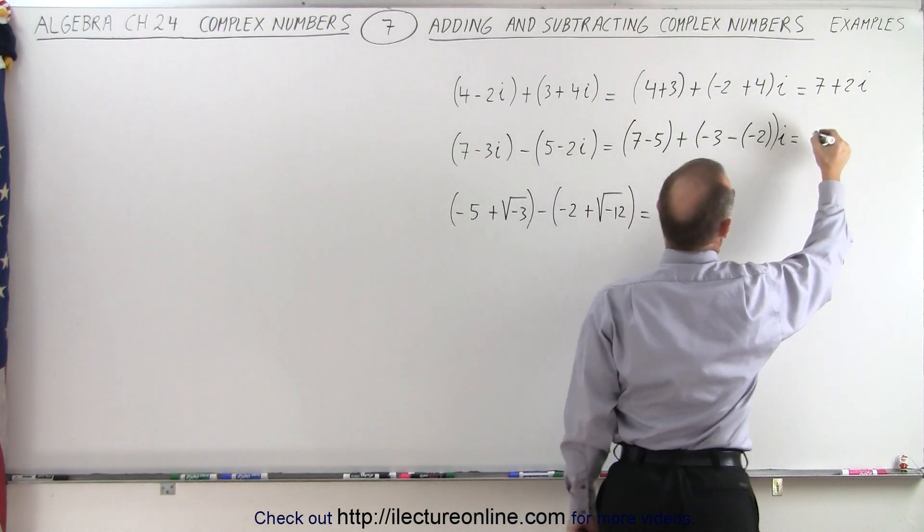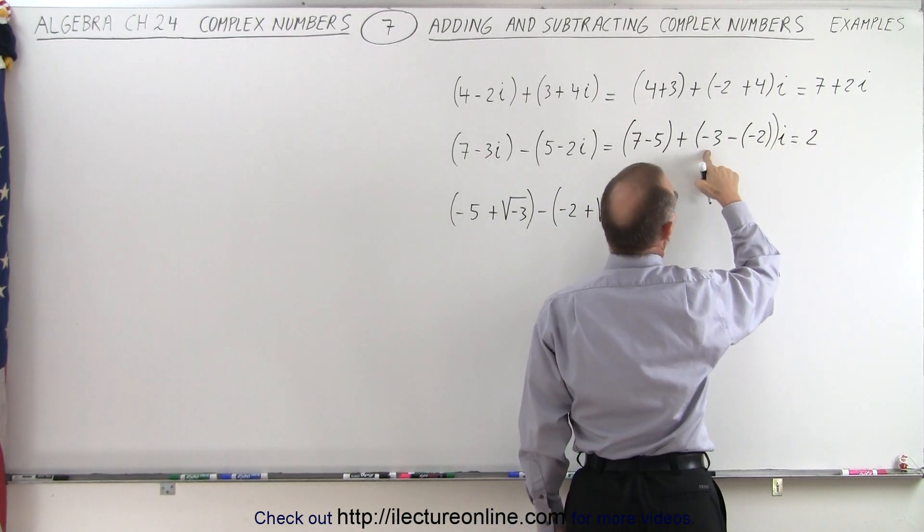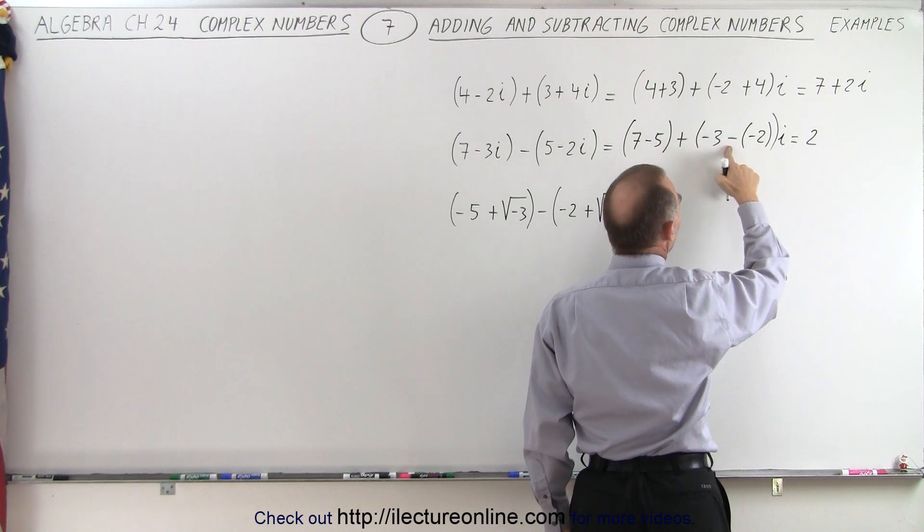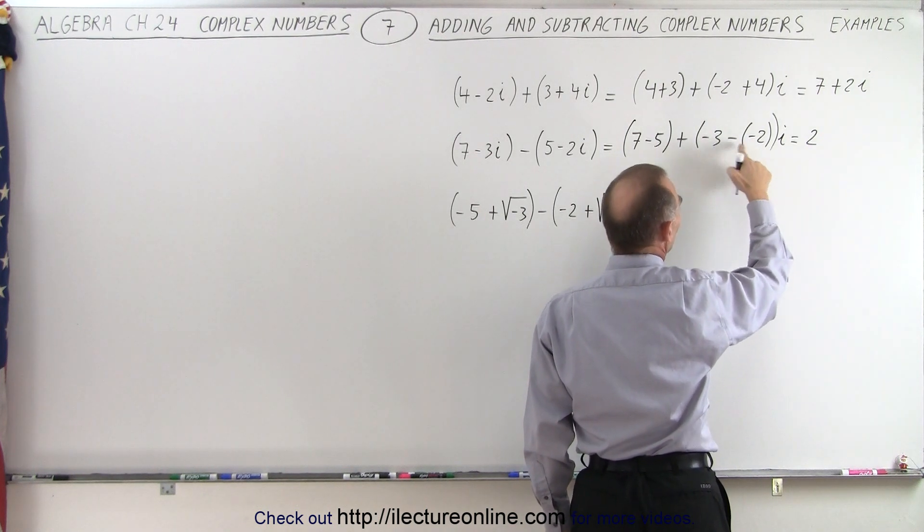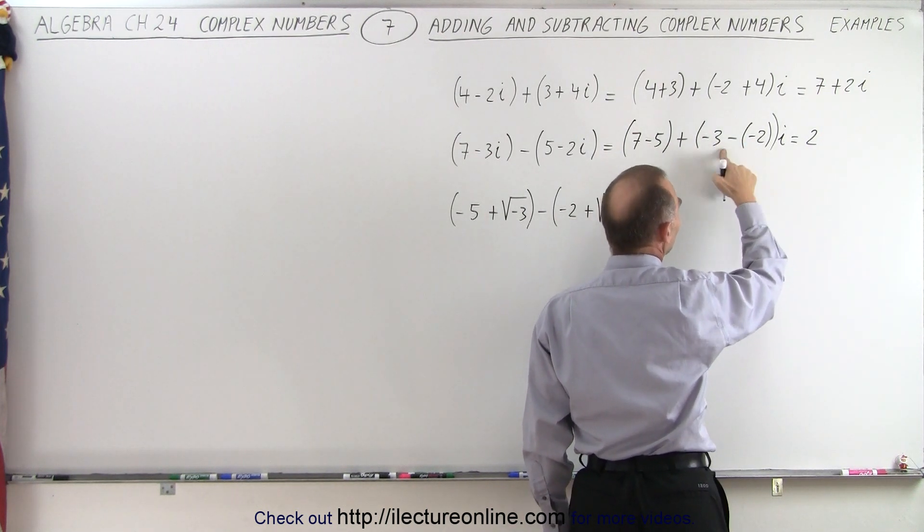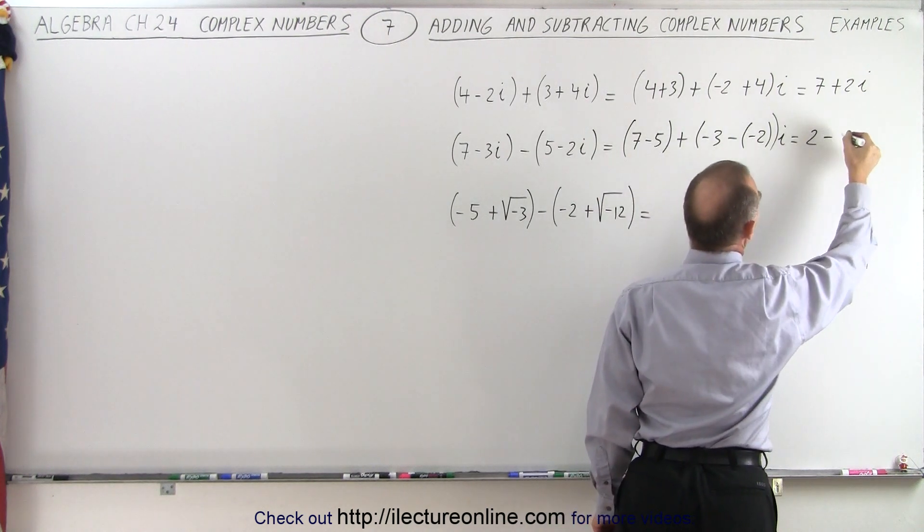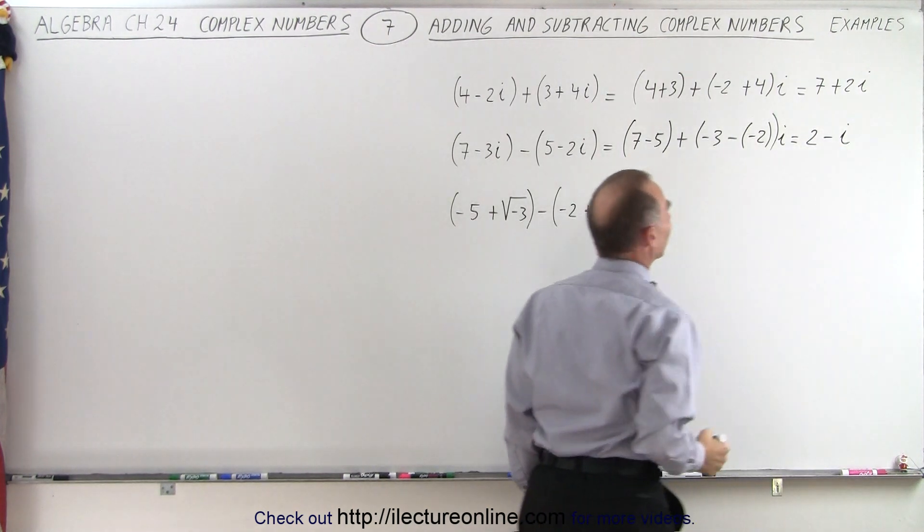And of course 7 minus 5, that's equal to 2. And minus 3 minus a minus 2. Now the minus times a minus becomes plus 2. Negative 3 plus 2 is negative 1 times a plus would be negative 1i or simply negative i.